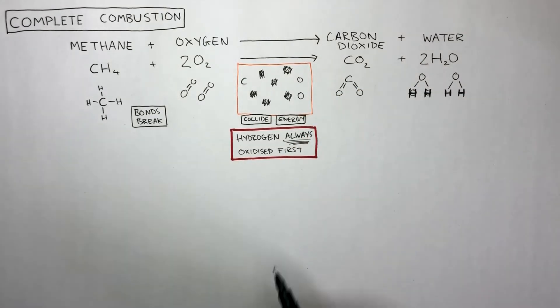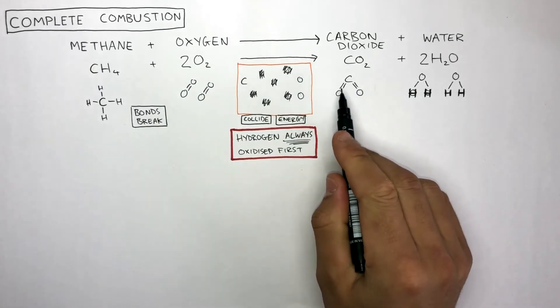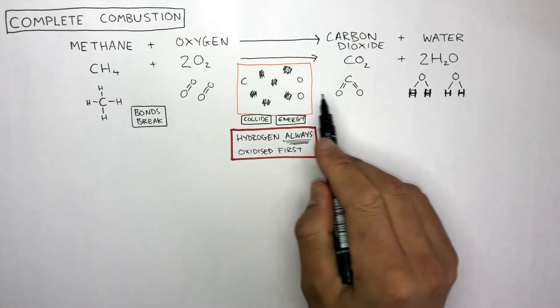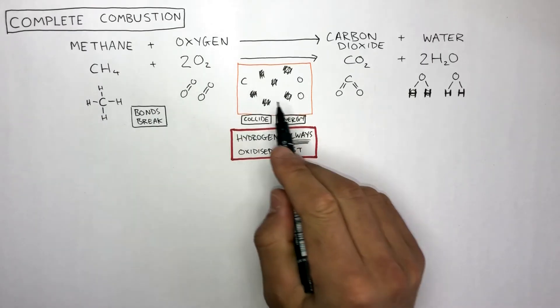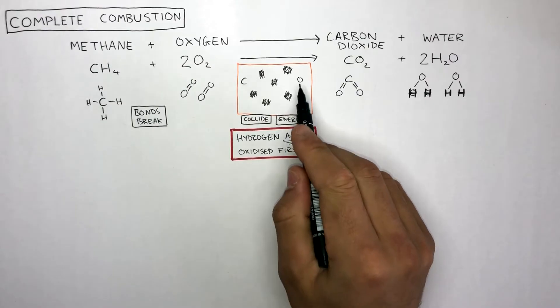In this carbon dioxide molecule, there's a carbon atom covalently bonded to two oxygen atoms. And this links perfectly to the fact there is one carbon atom left and two oxygen atoms left to react with one another.